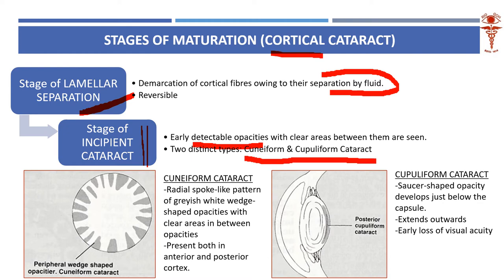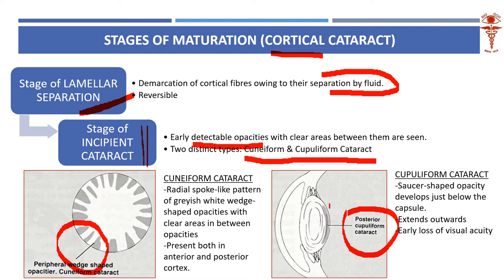The cuneiform will be in the periphery — something very similar to a coronary cataract which we discussed in pediatric cataract, but not the same. Don't confuse them. This is cuneiform — cuneiform opacities, like the Egyptian letters. And the cupuliform cataract is here. These are the early initiations of an incipient cataract in this progression.